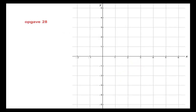Dan gaan we even kijken naar opgave 28. Ik heb een aantal punten: min 2, min 1. Dus ik ga vanuit de oorsprong 2 naar links en 1 naar beneden. Ik heb het punt 4, 5 — dus ik ga 4 naar rechts en 5 omhoog. En ik heb het punt D, dat is het punt 2, 0.